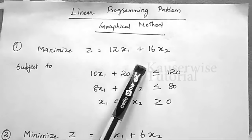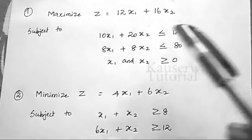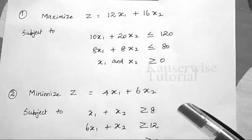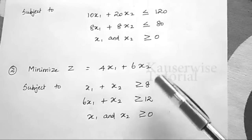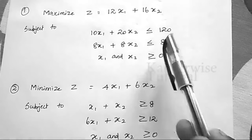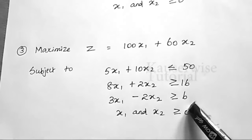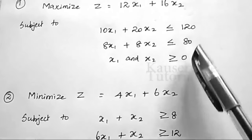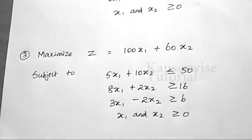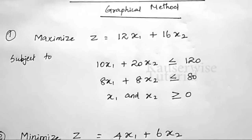I am going to explain three different models of the graphical method. The first one is a maximization problem and the second one is a minimization problem. In the first two models, we have two constraints each. The third model is also a maximization problem, but with three constraints. I will explain the first model in this video, and the remaining second and third will be covered in separate videos.